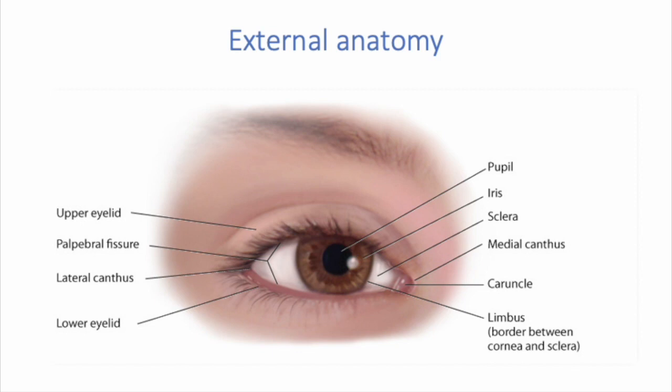The iris functions as a diaphragm, varying the opening at its center which is the pupil. It's able to constrict, controlling the amount of light emitted into the retina, and also able to dilate to allow more light to help you see. Muscle fibers of the iris contract the pupil and allow accommodation for near vision. It dilates the pupil when light is dim and for far vision as well. The pupil is that small opening located in the middle of the iris, allowing light to come in.